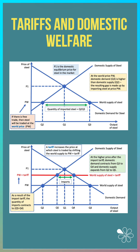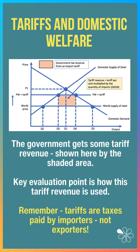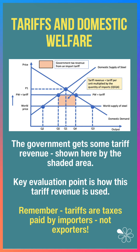And as a result, domestic demand contracts from Q3 to Q4. Domestic supply goes up from Q2 to Q5. So imports get reduced by the tariff. The government gets some tariff revenue, shown here by the orange shaded area.